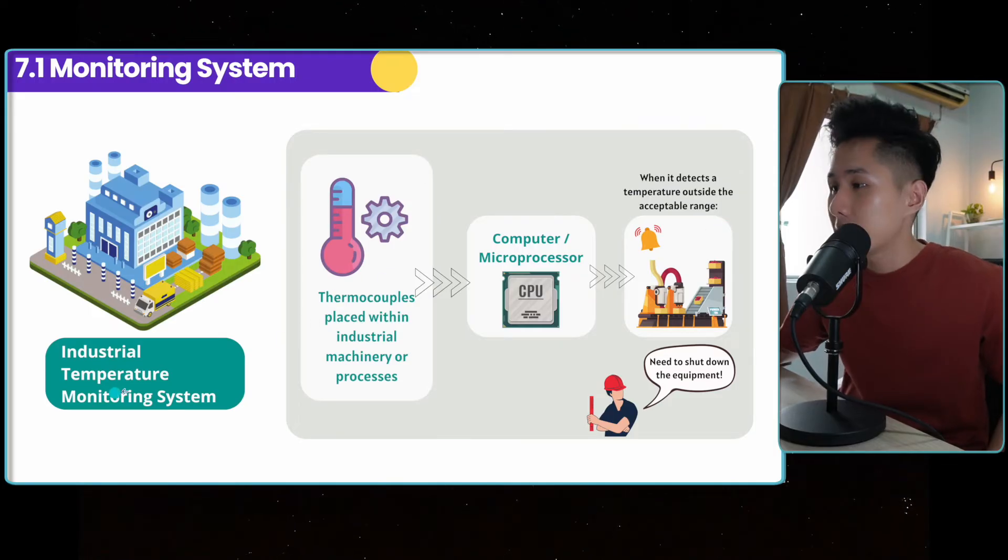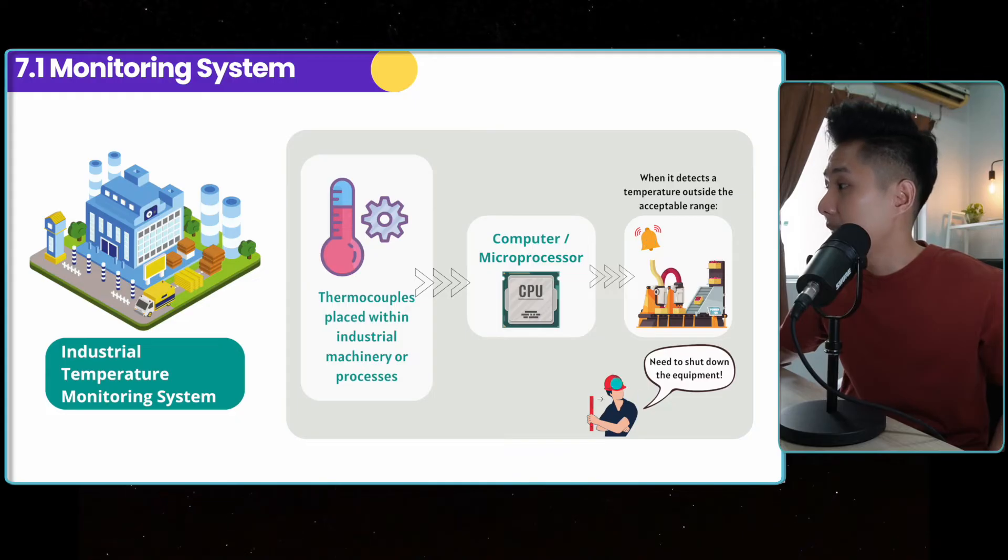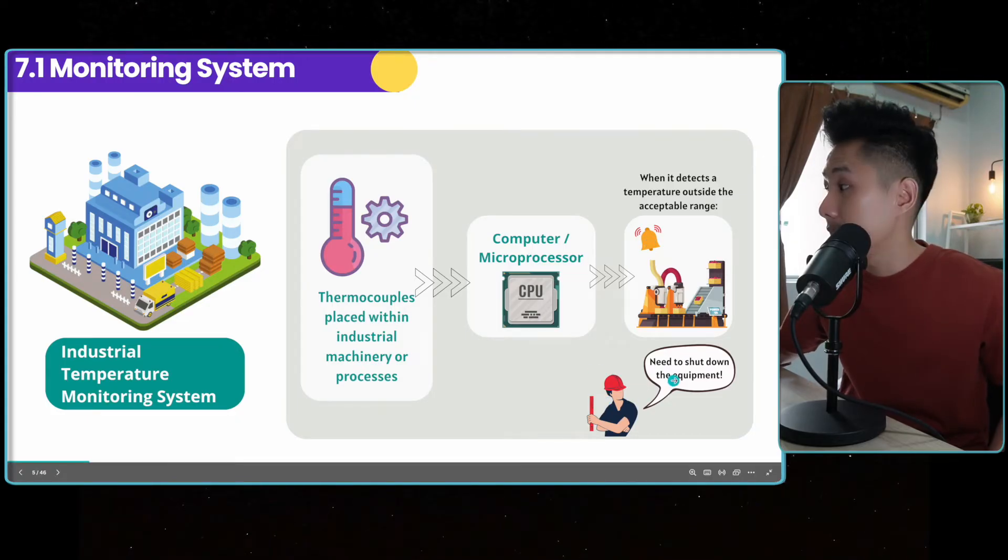Example number two, industrial temperature monitoring system. Thermocouples, a sensor that senses temperature, send data to the computer. And then if it detects a temperature outside the range, it will provide a warning. And then the worker will then turn off the equipment.